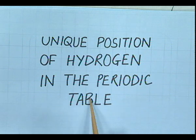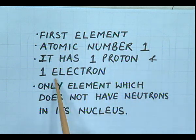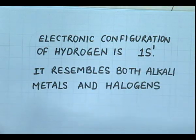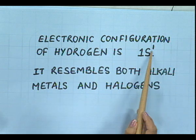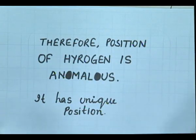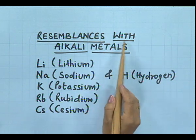Why is its position unique in the periodic table? We will discuss that in some of its properties it resembles the alkali metals and it also resembles the halogens, but at the same time it differs from alkali metals as well as from the halogens. It is the first element, its atomic number is one, it has one proton and one electron, and it is the only element which does not have neutrons in its nucleus. Its electronic configuration is 1s1, and it resembles both alkali metals and halogens. Therefore, the position of hydrogen is anomalous — it has a unique position with resemblances with alkali metals.